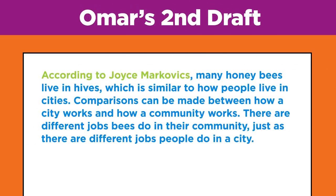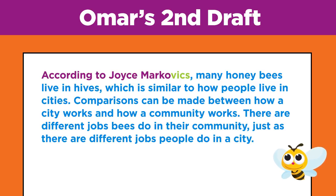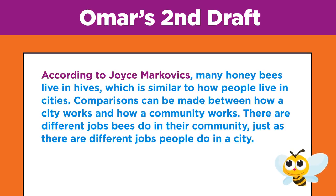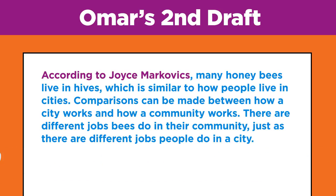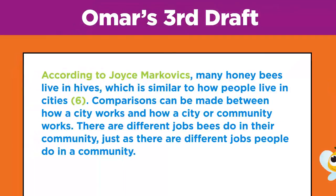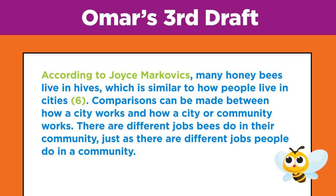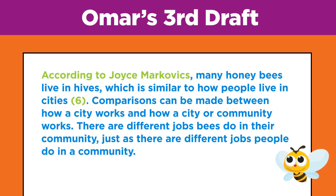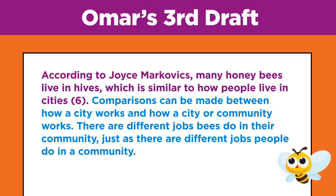In his second draft, Omar incorporates a signal phrase by starting with 'According to Joyce Markovic' — these four words signal the reader that the idea that follows belongs to Markovic. However, there's nothing to show when Markovic's idea ends and Omar's begins. In his third draft, Omar has further signaled to the reader which ideas belong to Markovic and which are his own. He added the page number to indicate where the ideas came from in Markovic's book. The page number also shows where Markovic's ideas end.